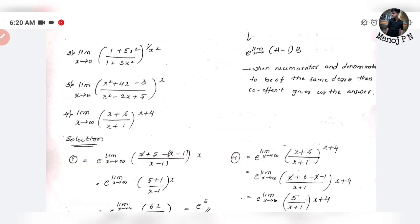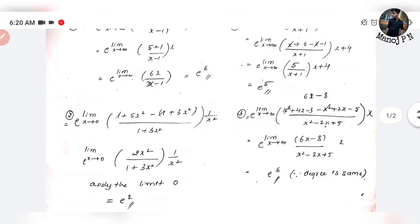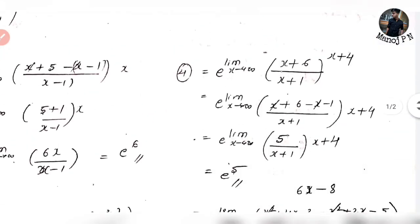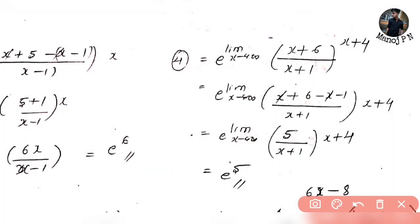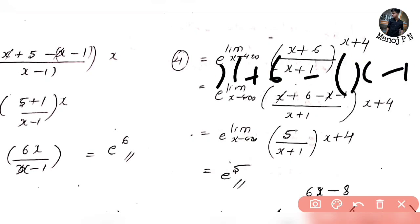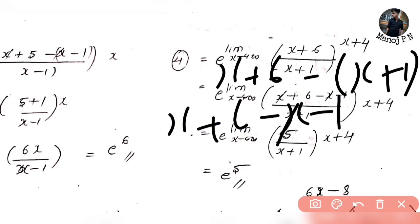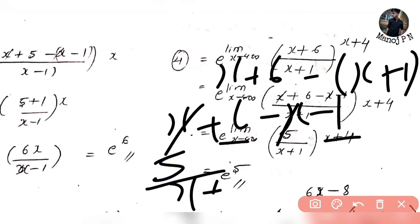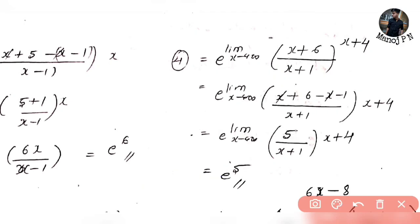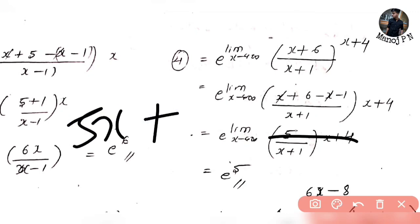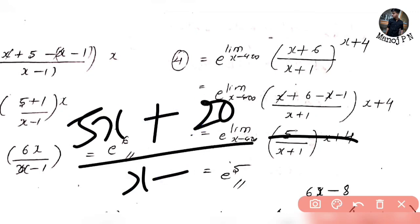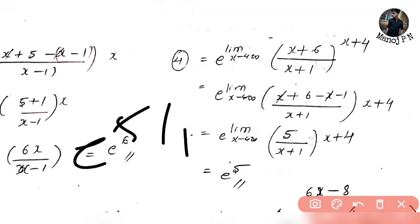The next question: limit x tends to infinity of (x+6)/(x+1) whole raised to power (x+4). Computing (x+6)−(x+1) = 5, so we get 5/(x+1) into (x+4), which gives (5x+20)/(x+1). Since the degree is the same, the coefficient is 5 divided by 1, so the answer is e raised to power 5.